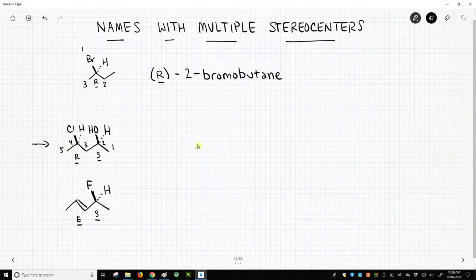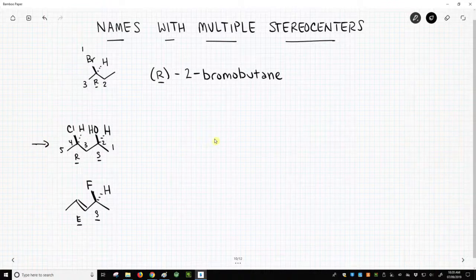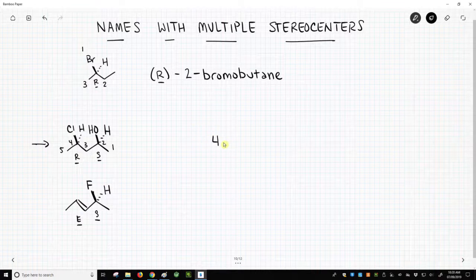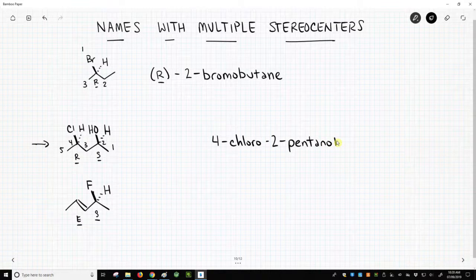And then we have these two stereocenters. So let's name the molecule, and then stick in the stereocenters. So this is going to be a 2-pentanol, and there's a chlorine on the 4-position. So 4-chloro-2-pentanol, or pentane-2-ol, if that's what you prefer. And now we have to put in our stereocenters.